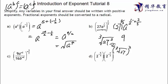For the a term: a to the one over two times two over three — power of power means we multiply. The 2s cancel, leaving a to the power of one over three. Converting the fractional exponent to radical form gives us the cube root of a. Since it's not a square root, you must write the 3.